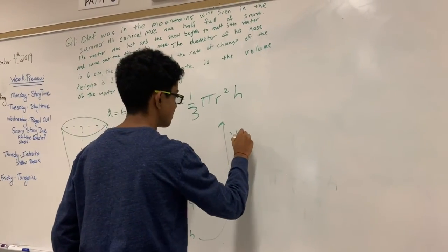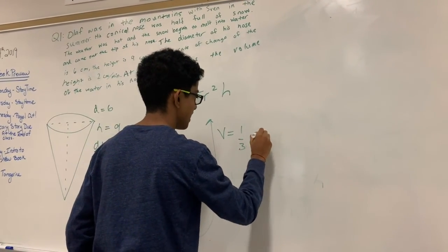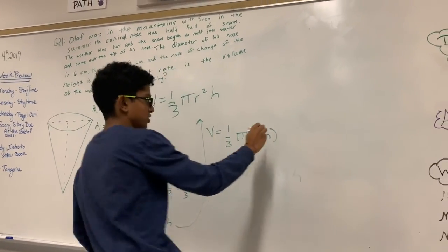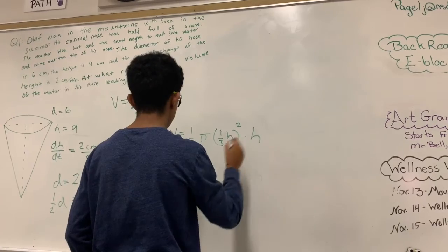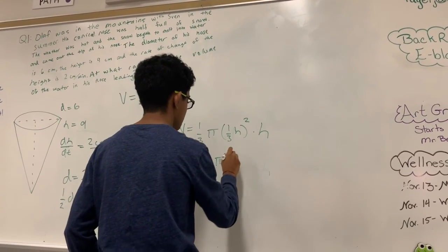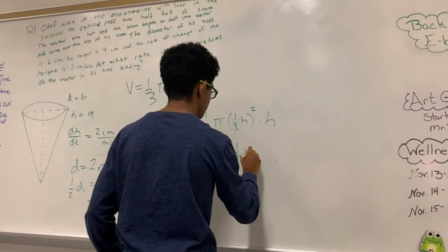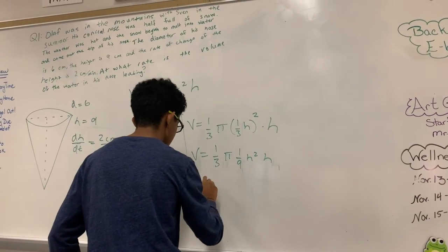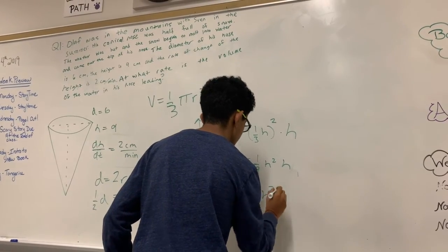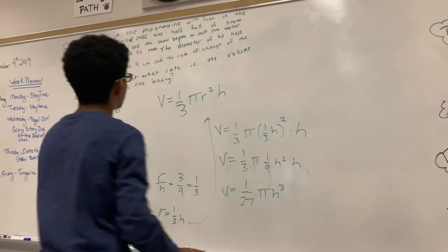So now we plug this back in here. So you get V equals 1 third pi, 1 third h squared times h. So simplifying that out, it would be 1 third pi, 1 ninth h squared h, which is 1 over 27 pi h cubed. Now we need to find the derivative.